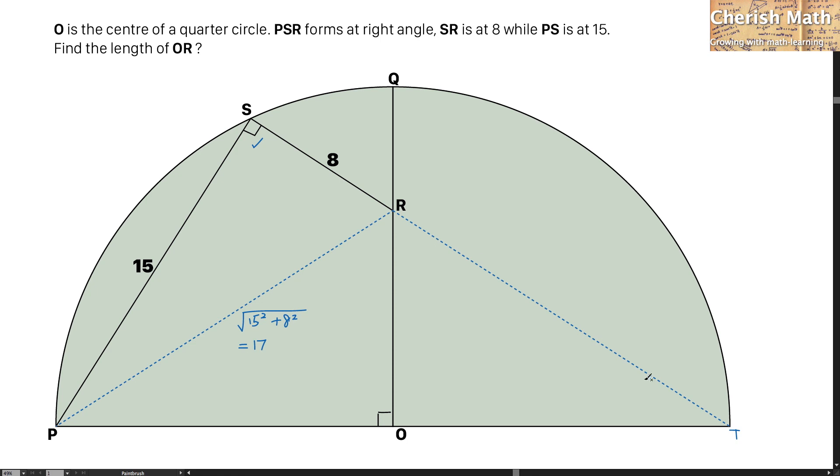For the line RT is in the same length with the line RP. So these two lines are same in length. That is 17 units.